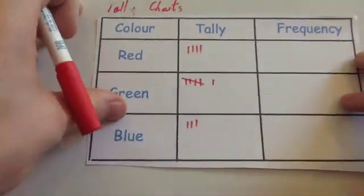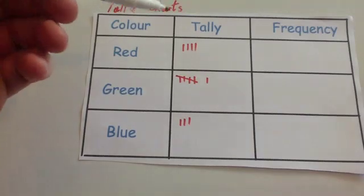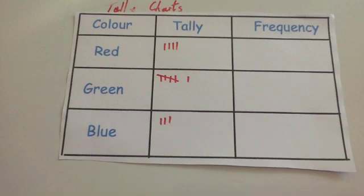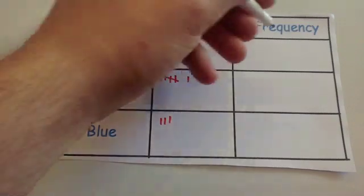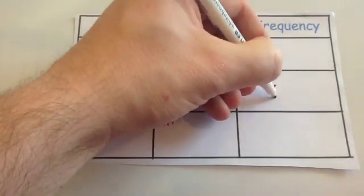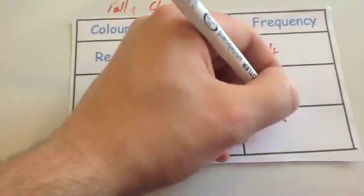Okay, so we have filled out the data, or filled out the tally chart with the data. We have put the tallies in, so let's put the frequencies. Frequency is just another word for how many. So here we've got four for red, so four. We've got six for green, so six. And we've got three for blue, so three.